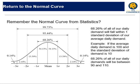If you go back to your statistics and look at the normal curve, we know from looking at this graph here that 68.26% of all our daily demands are going to fall within one standard deviation of the mean.